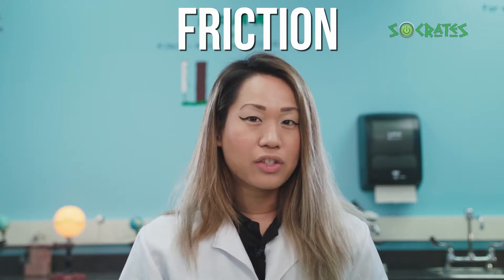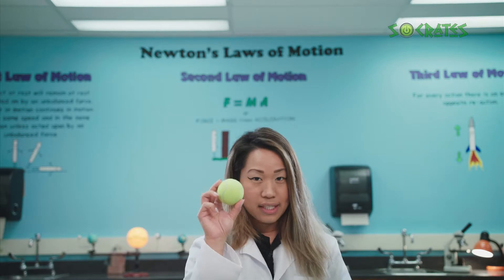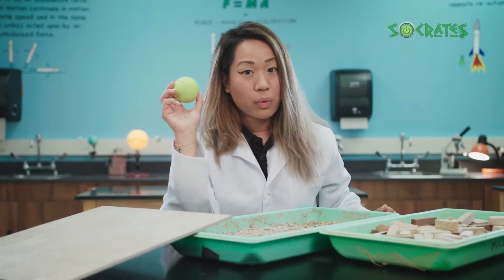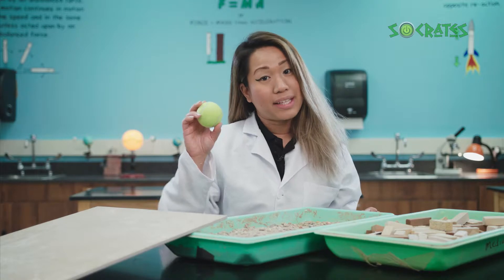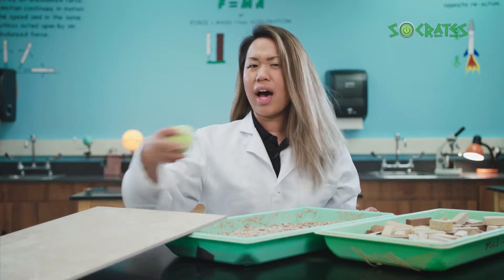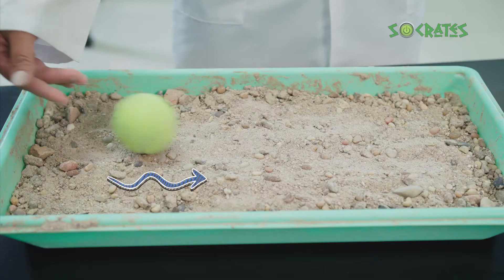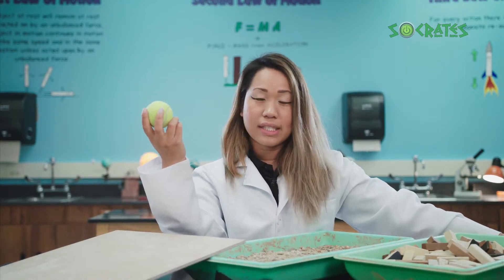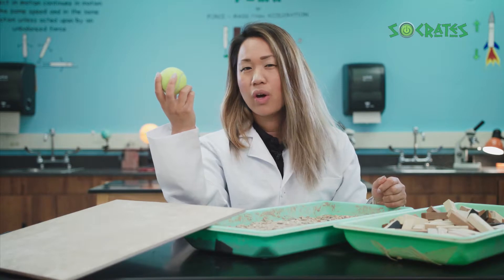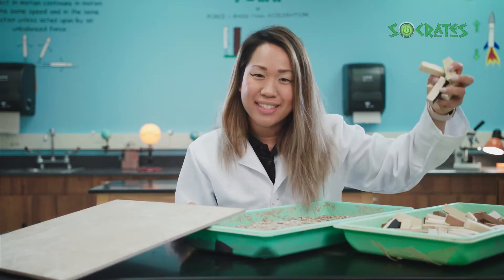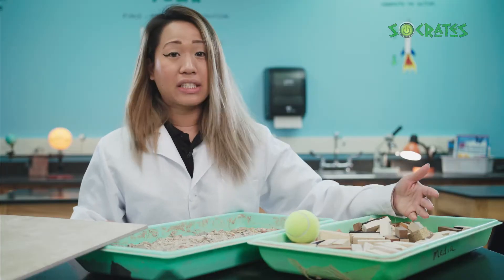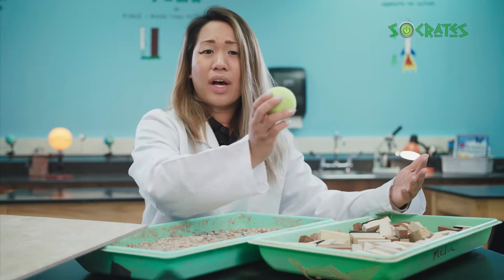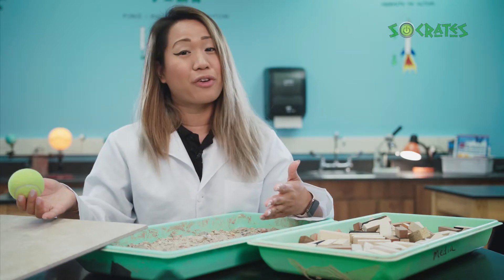Now that we understand gravity a little better, let's experiment with friction. How does friction work anyway? We can observe friction by rolling this ball across our different materials. The ball moved pretty quickly and far across the tile — there was not a lot of friction. The ball rolled across the sand, but not very far; the sand was creating a small amount of friction. The blocks caused a lot of friction. When the ball rubs or rolls against different materials, it produces different amounts of friction.